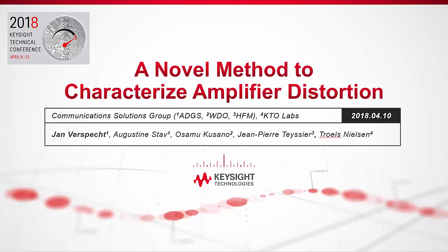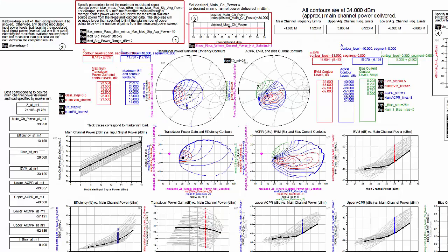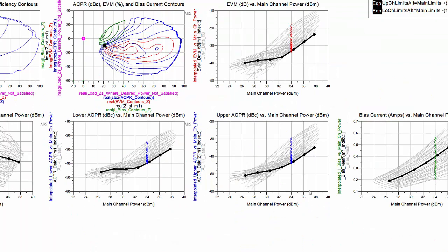The ACPR is also computed from the distorted output spectrum. As I stated earlier, we scale up the amplitude of the input modulated signal, so we get EVM and ACPR data as a function of average modulated input or output power. But we have to avoid setting the modulated input signal's power so high that it exceeds the input power range of the measured load pool data, which would lead to extrapolation.